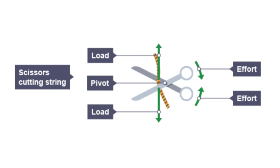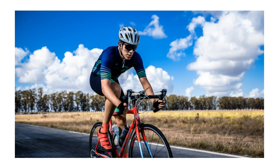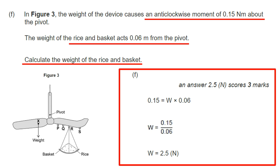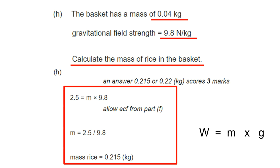Moments are used in everyday life: a screwdriver lifting a paint tin lid, scissors using twisting force, and gears in bicycles. Exam question on gears: the force on the pedal causes a moment around the pedal axle; this force is transmitted through the chain, causing a moment around the rear axle. On a balanced seesaw, the clockwise moment equals the anti-clockwise moment, allowing you to find the weight of an unknown object.